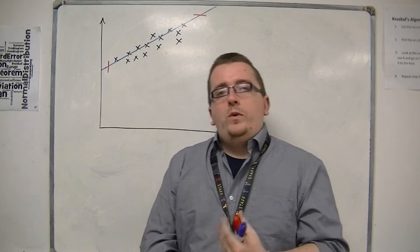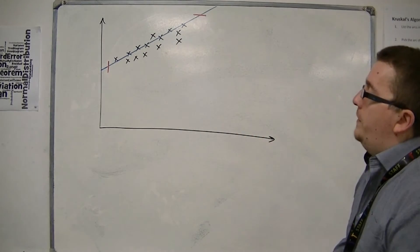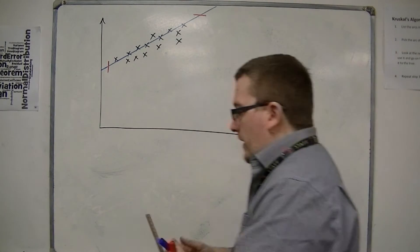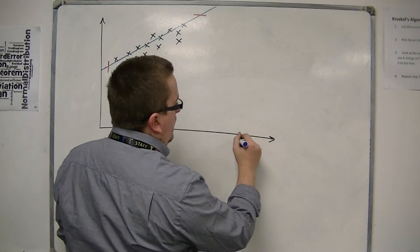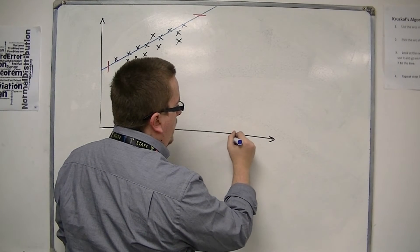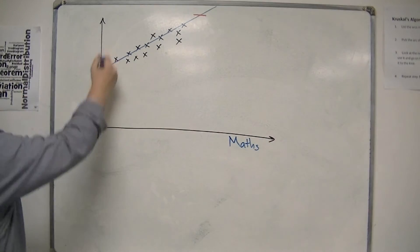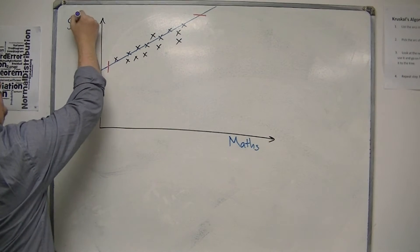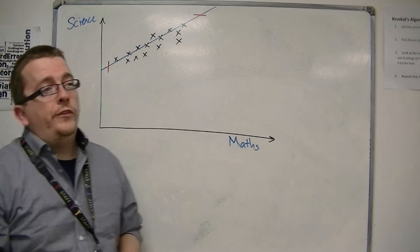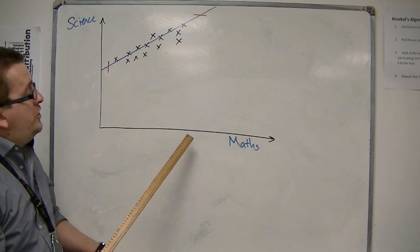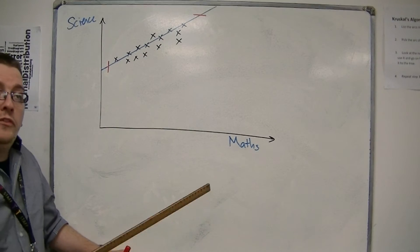In the previous video, we looked at how to draw the line of best fit, and I drew a line of best fit for this set of data. So let's say that this was test scores on a maths exam, and this was test scores on a science exam. And what happened was that in general, if a student did better on the maths exam, it appears they also did better on the science exam.